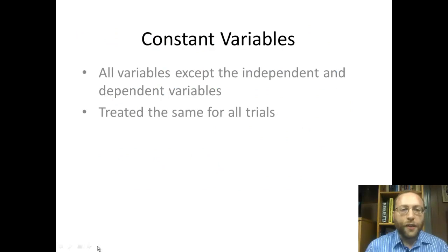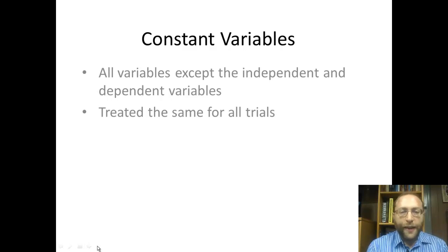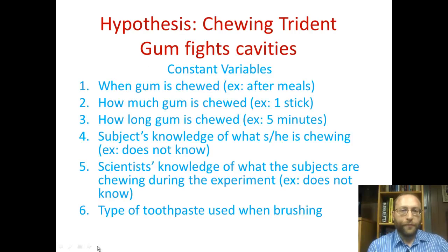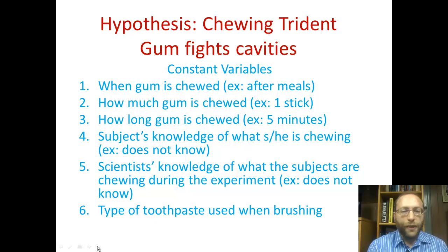The third variable type is the constant variables. These are all the other variables, and you have to treat them the same for all trials. If you don't, then things will be messed up, and we'll see why in class tomorrow. Here are some constant variables — and there are so many more than this.